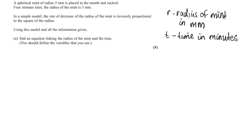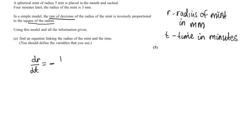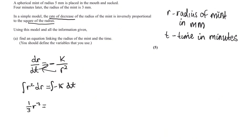Now let's get to forming the model. The rate of decrease of the radius means it's dr/dt, and because it is a decrease, it's going to be a negative value. It's inversely proportional to the square of the radius, so it equals negative k over r squared — where k is some constant. This is our first formula. We can bring r squared to one side and dt to the other, then integrate both sides. On the left side we get a third r cubed, and on the right side, since there's no t in k, we get minus kt plus c.